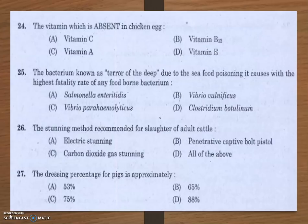For beef cattle the dressing percentage is approximately 58–72%, for cattle it is 58–62%, for lamb it is 54%, and for poultry it is 71%. Here the dressing percentage for pigs is approximately 75%.